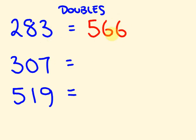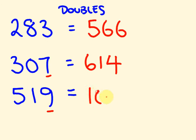For 307: the last digit 7 is above 4, so we do add 1. Double 30 is 60, so we get 61. The units digit: 7 doubled would have been 14, so the units answer is 4. Answer: 614. For 519: the last digit 9 is above 4, so we add 1. Double 51 is 102, so we get 103. The 9 doubled gives 18, so we put the 8 down. Answer: 1038.